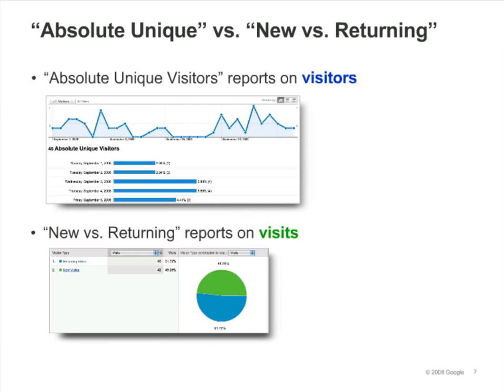The absolute unique visitors report counts each visitor during your selected date range only once. So, if visitor A comes to your site five times during the selected date range and visitor B comes to your site just once, you will have two absolute unique visitors.